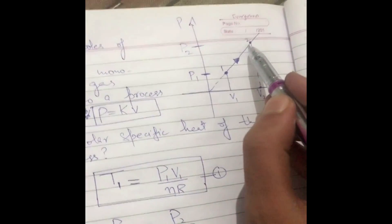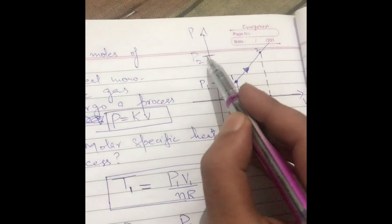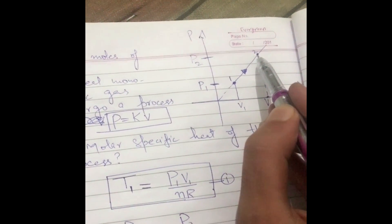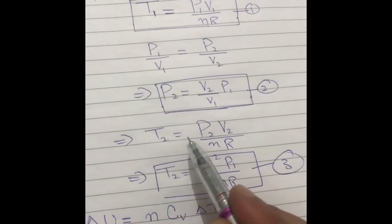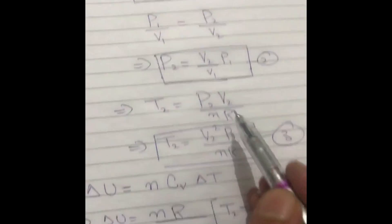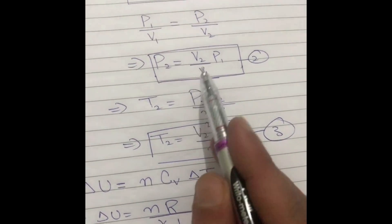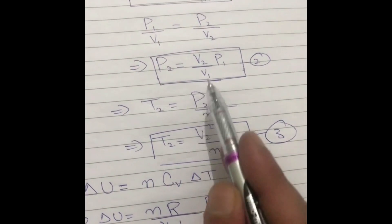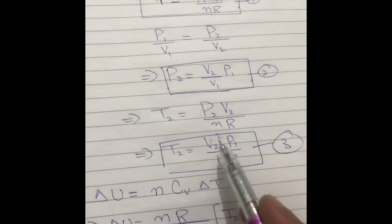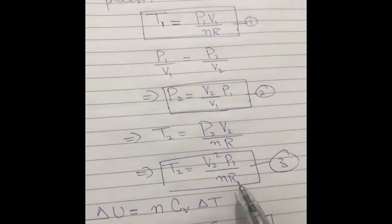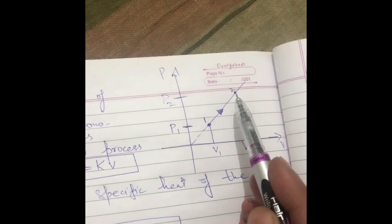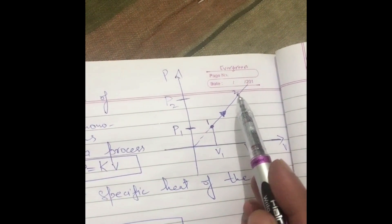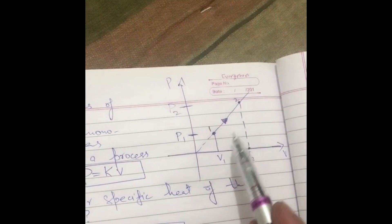Now that I have the volume and pressure at point 2, I can find the temperature T2. T2 is equal to p2·v2 divided by nR. Substituting p2 = (v2/v1)·p1, we get T2 = (v2/v1)·p1·v2 divided by nR. So in short: first I found the temperature at point 1, then I found the pressure at point 2 using the slope equation, and then the temperature at point 2.